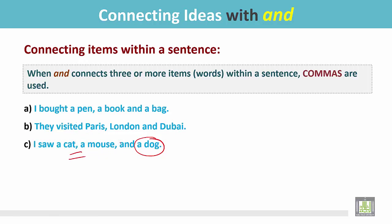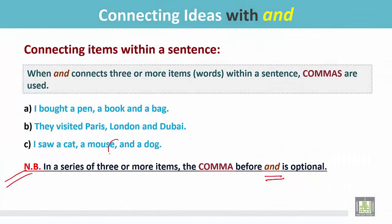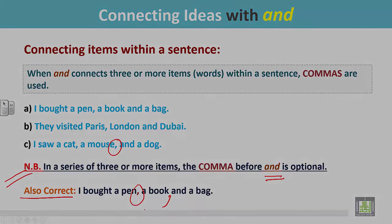Note: In a series of three or more items, the comma before 'and' is optional. You can put a comma or leave it out — both are correct. Example: 'I bought a pen, a book, and a bag.' There is a comma between a pen and the book, and there is no comma before 'and.' You can put a comma, but it is not mandatory.